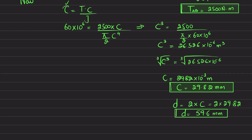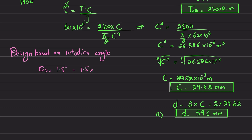Now we design based on the maximum rotation angle, which is given as 1.5 degrees. Converting: since 1° = π/180 rad, θ_D = 1.5 × π/180 = 26.18 × 10⁻³ radians. The angle at D must not exceed this value.